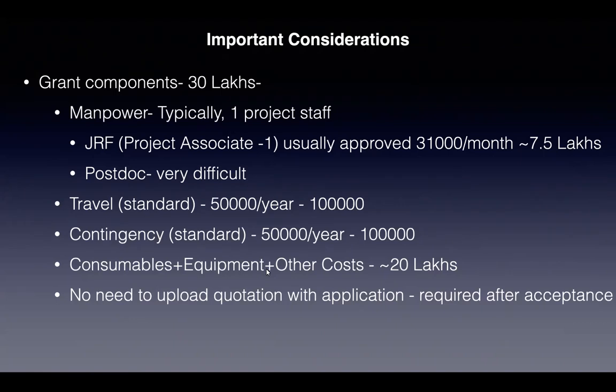Manpower, for example, is a very important consideration. Typically, you can ask for one, maybe two project staff. As per the advice given by my senior colleagues, typically you can ask for one staff. It is very difficult to get approval for a postdoc, so if the kind of work you're proposing can be done by a project associate, then please ask for a project associate or a JRF. The salary approved by government norms for a JRF or project associate is 31,000 per month, which adds up to about 7.5 to 8 lakhs in two years. So out of these 30 lakhs, 8 lakhs go to that. If you ask for two staff, about 50% or more of your grant money has already gone to manpower.